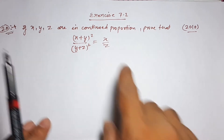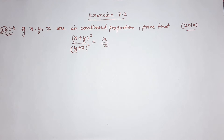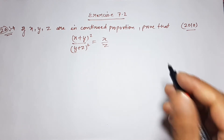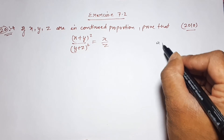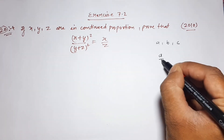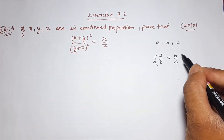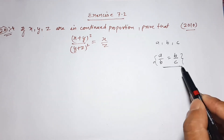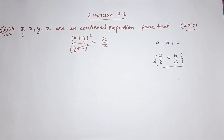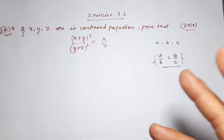When we say three terms a, b, c are in continued proportion, it means a upon b is equal to b upon c. That arrangement is what we call continued proportion.